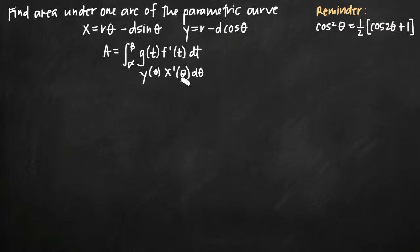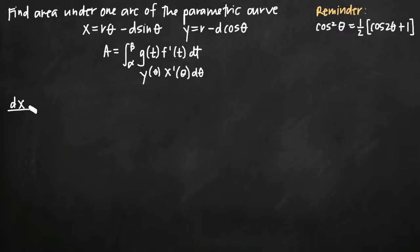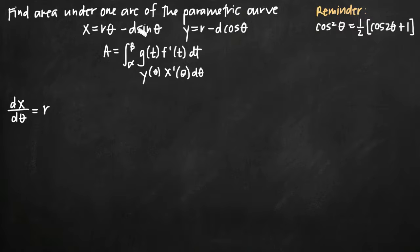Now we're looking at variables that actually match our problem. As you can see from the formula, the first thing we need to do is find the derivative of x, which is dx over d theta. We'll be able to plug y directly into the formula, but we need the derivative of x. So dx over d theta equals — remember r and d are constants — the derivative of r theta gives us r, and the negative d stays as a constant coefficient, with the derivative of sine theta being cosine theta, so we get r minus d cosine theta, which is exactly the same as our equation for y.